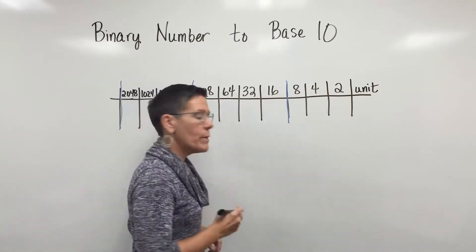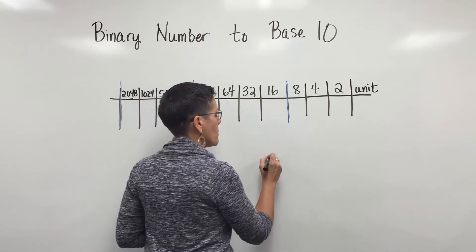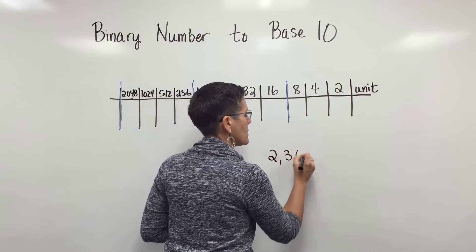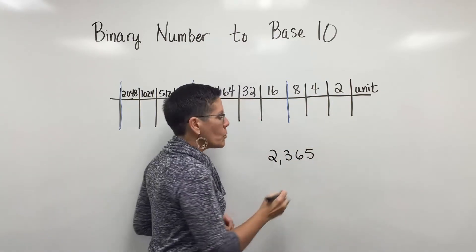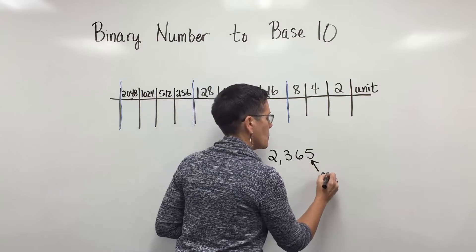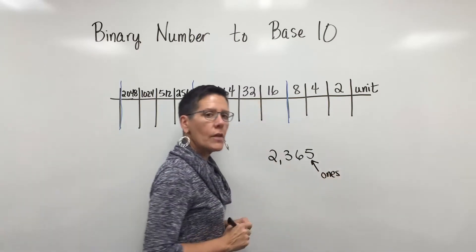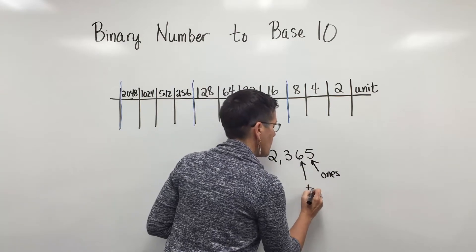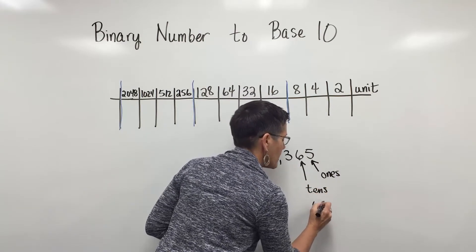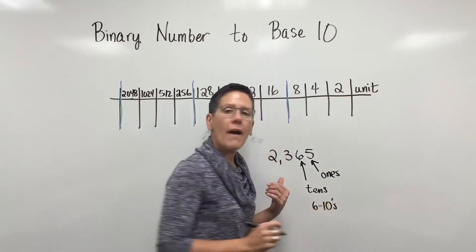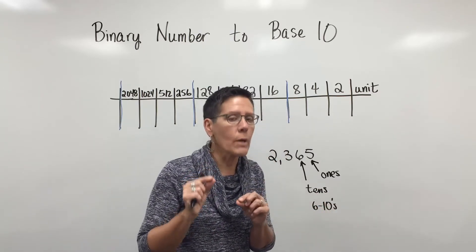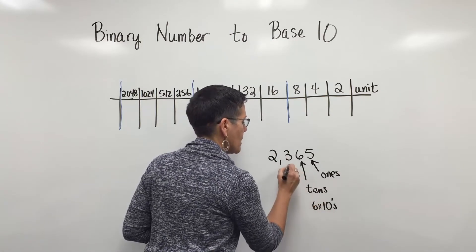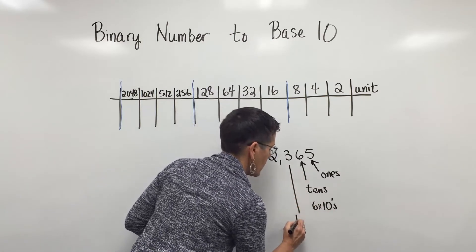I'm going to go back to base 10 for just a minute. When I have the number 2365, the 5 is in the 1s position, we often call it the units position. The 6 is in the 10s position, and it means that we have 6 10s, or a value of 60. That 6 represents a value of 60, and it means 6 times 10.